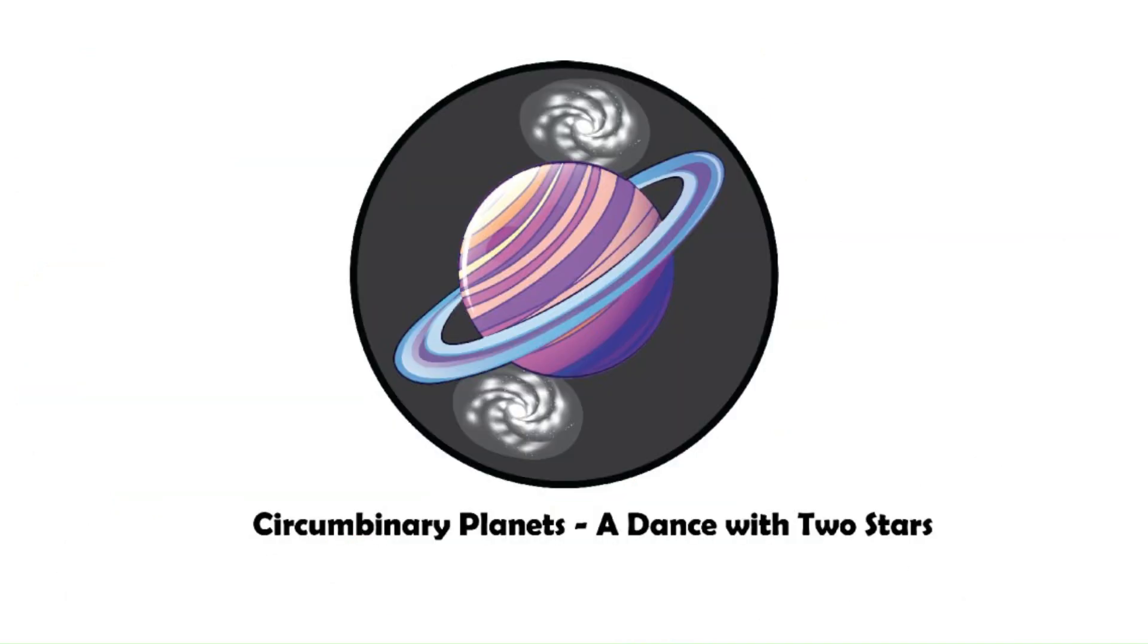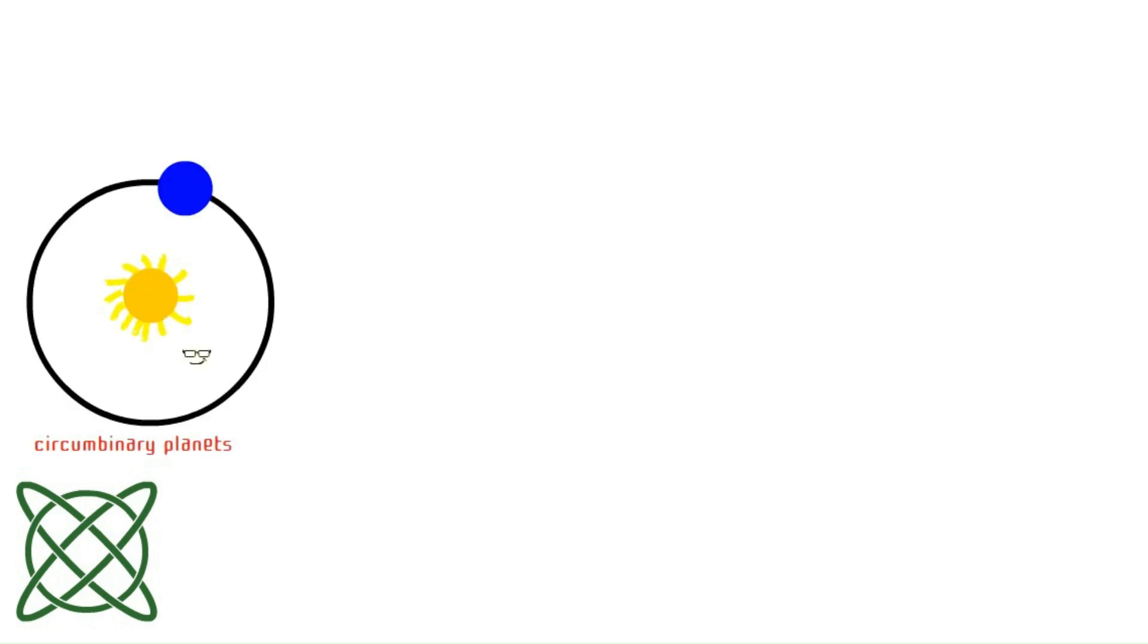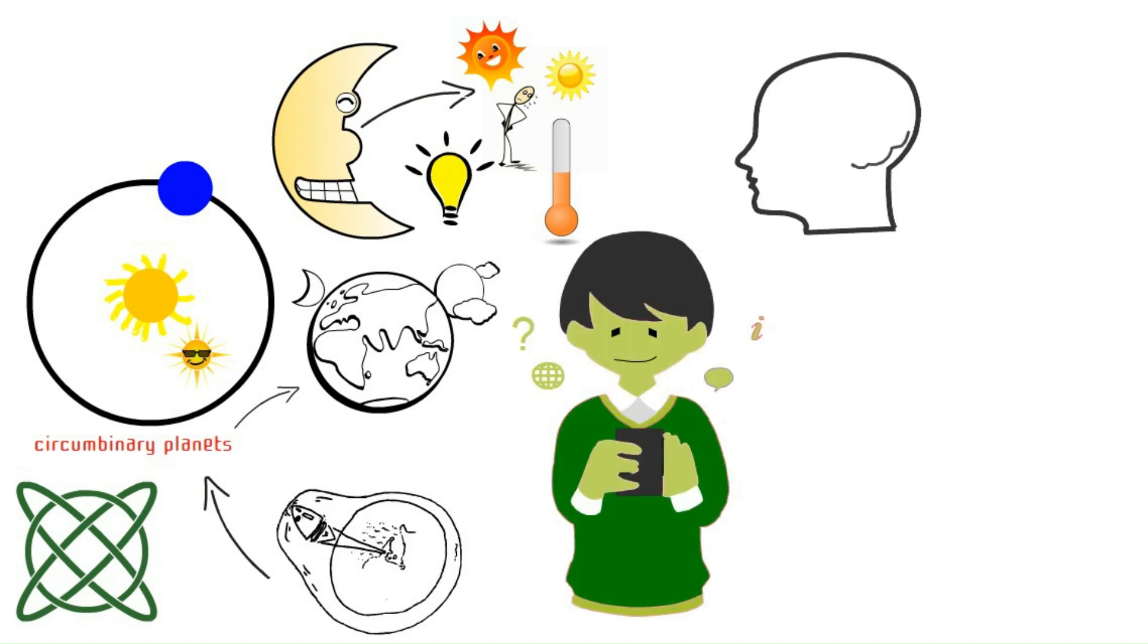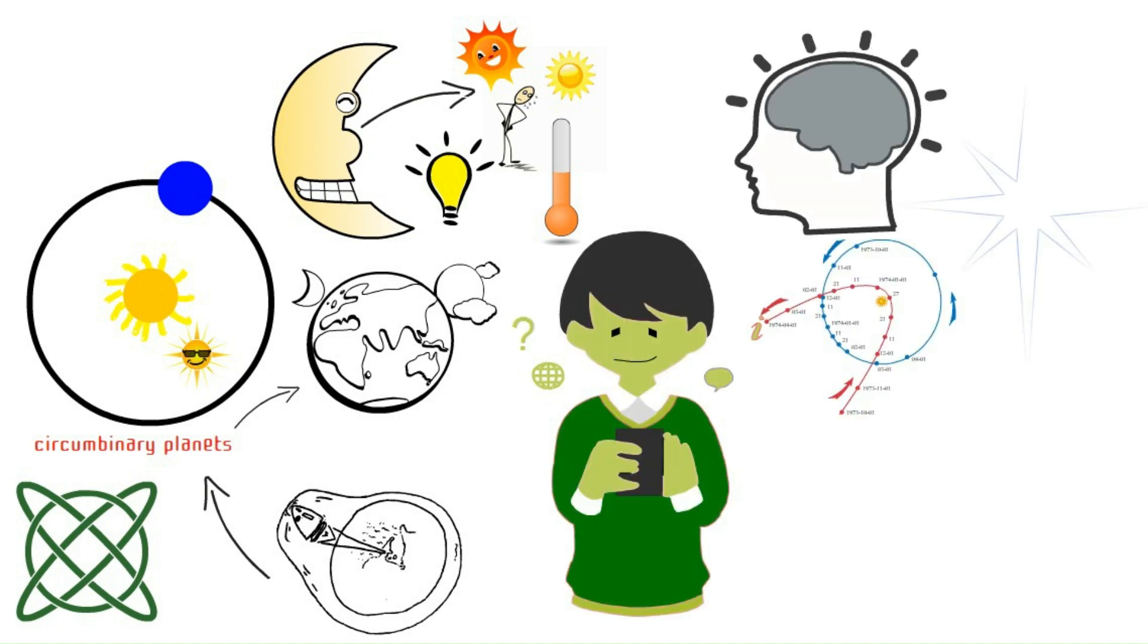Circumbinary planets. A dance with two stars. But binary stars can even get more complex. We have circumbinary planets that actually orbit both stars in a binary system. Imagine a cosmic ballet with a planet gracefully waltzing around two suns, bathed in their combined light and warmth. The gravitational forces at play in a circumbinary system would be unlike anything we experience on Earth. Studying these planets can help us understand the complex orbital dynamics of multiple star systems and the potential challenges and opportunities for life in such environments.